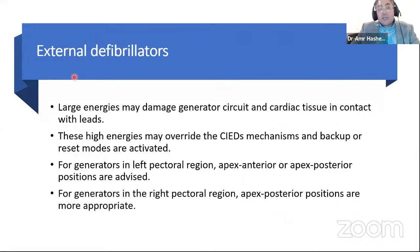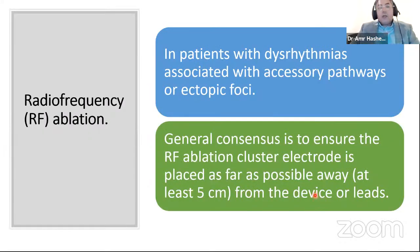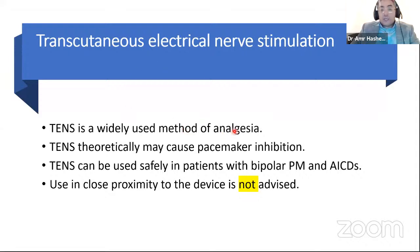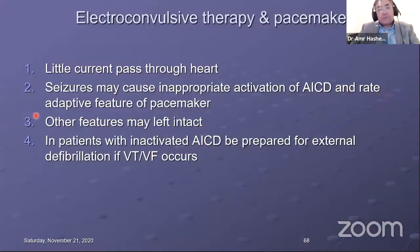To reduce diathermy risk: use bipolar diathermy or ultrasonic harmonic scalpel; if unipolar is necessary, position so current does not pass near the device or leads; use infrequent short bursts at the lowest feasible energy; have temporary pacing and defibrillation available. For external defibrillators, place pads in apex-anterior or apex-posterior positions away from the generator. For RF ablation, the cluster electrode should be at least 5 cm from the device or leads. TENS may theoretically cause pacemaker inhibition but can be used safely in bipolar pacemakers and AICDs if kept away from the device.